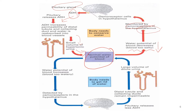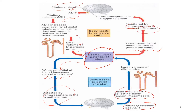However, if the water potential of blood increases — meaning blood becomes too watery — the same mechanism occurs: it is detected by the osmolar receptors, causing the pituitary to release less ADH. Less ADH causes the distal tubule and collecting duct to remain impermeable. At the end, it causes a large volume of diluted urine to be excreted, returning the normal water potential of blood to normal.